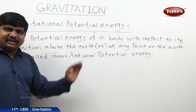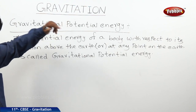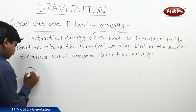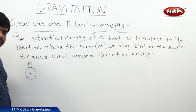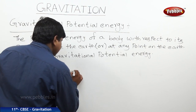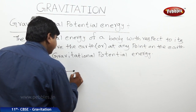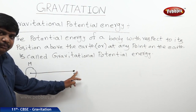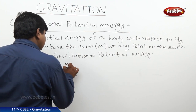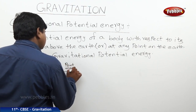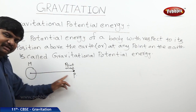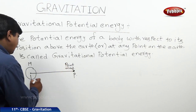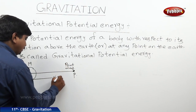For every physical quantity there is an expression. We are going to derive the expression for this physical quantity. Let us take a body of mass capital M. From the center of it, let us assume a point P — we can say it as a point mass. The force of attraction between these two point masses is G·M·m/r², where the distance from M to P is small r.